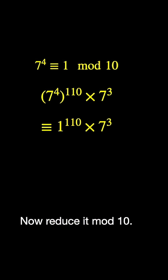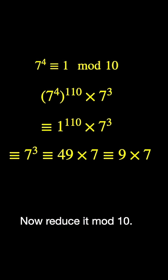Exploiting the fact that 7 to the 4th is 1, we can reduce this mod 10. So we get 1 to the 110 times 7 cubed. 1 to any power is 1, and 1 times 7 cubed is just 7 cubed. Now 7 cubed is congruent to 49 times 7. And since the last digit of 49 is 9, that's congruent to 9 times 7.